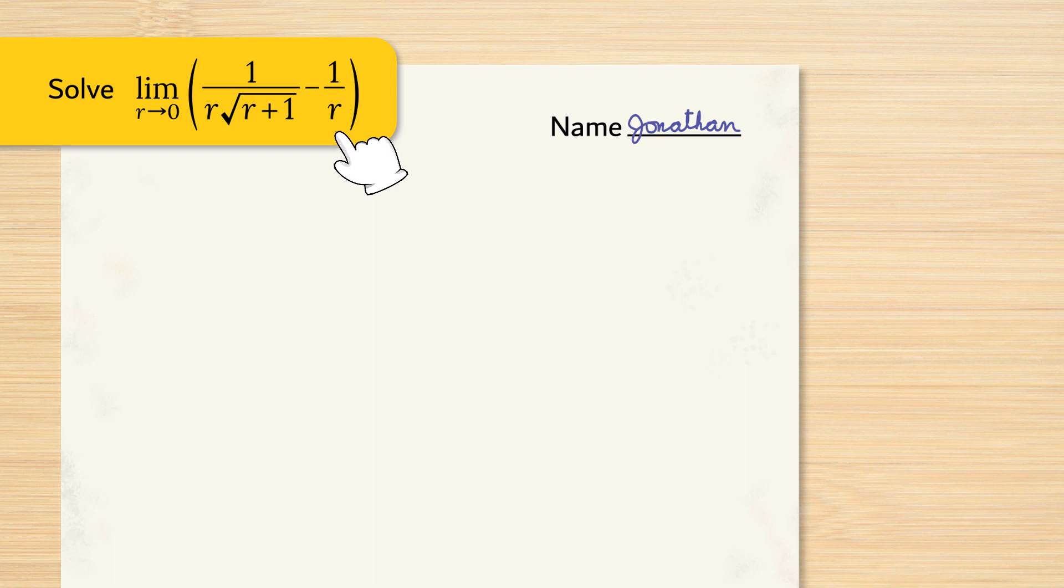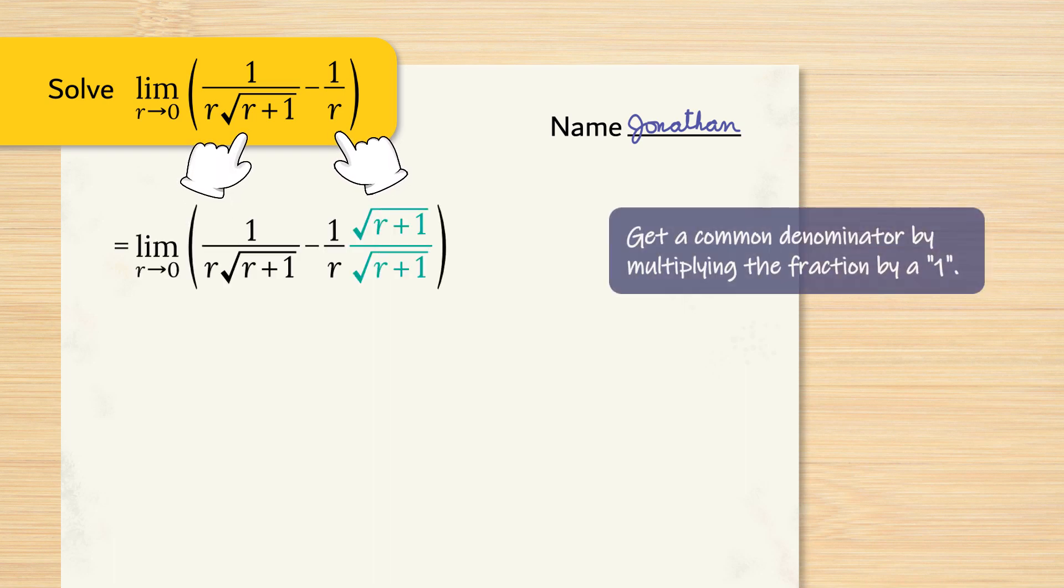Looking at the 1 over r, we can get the same denominator as the other fraction by multiplying 1 over r, numerator and denominator, by the factor square root of r plus 1. It's important that we multiply the same factor to the numerator and denominator because then we're multiplying by 1. We're not introducing anything new to this expression, but this does help us solve the limit.